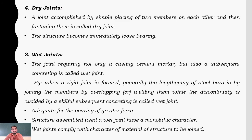Then comes dry joints. A joint accomplished by simple placing of two members on each other and then fastening them is called a dry joint. The structure becomes immediately load-bearing and is easily dismantleable.